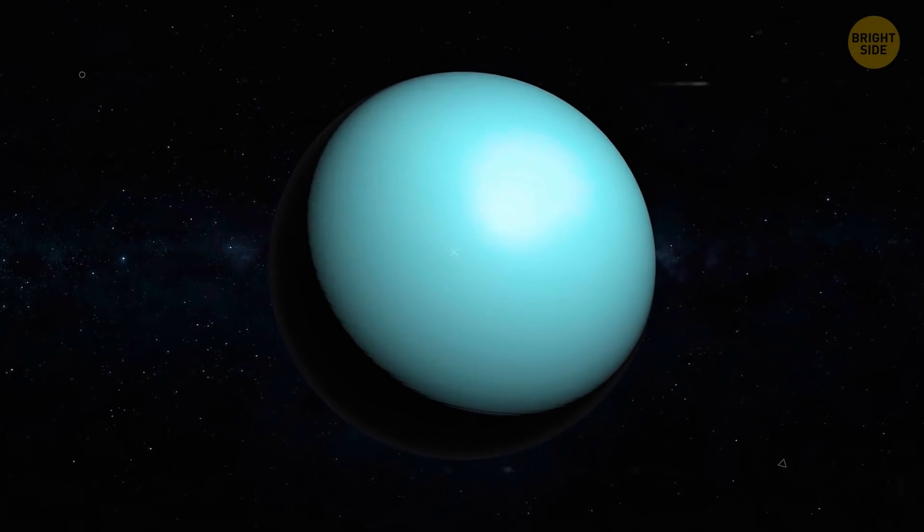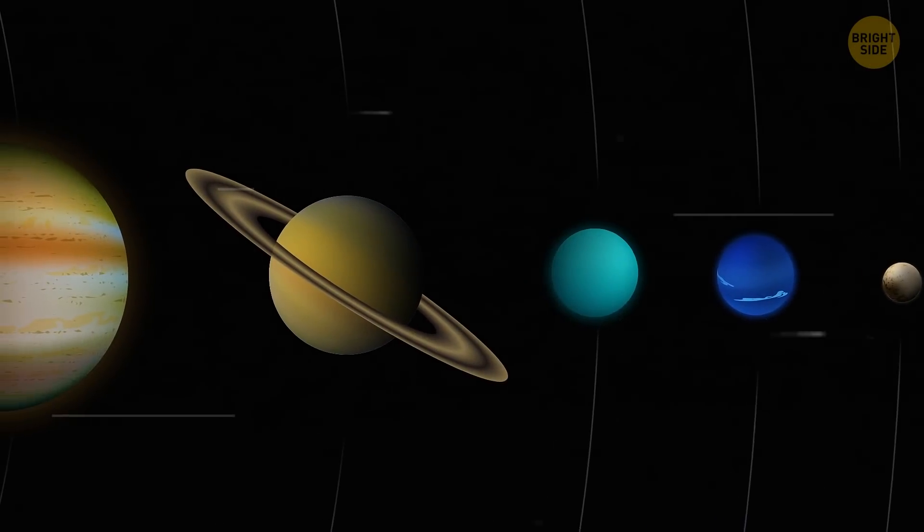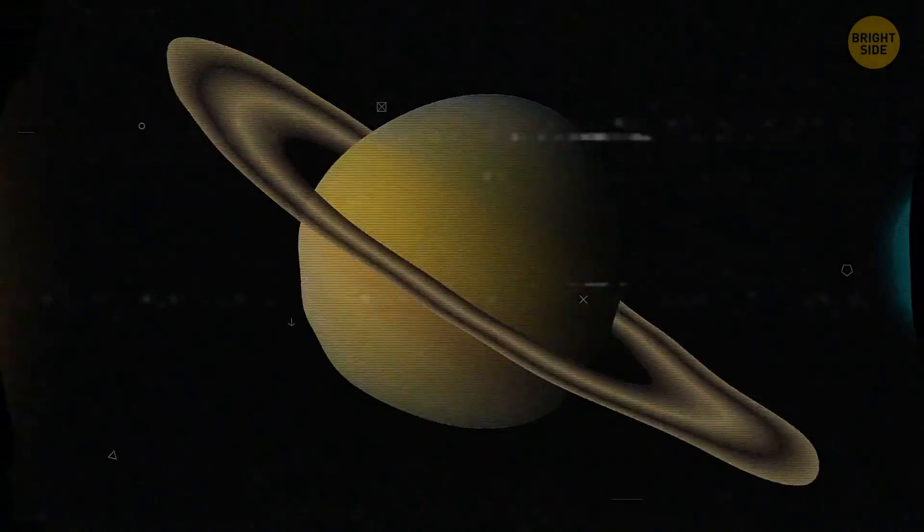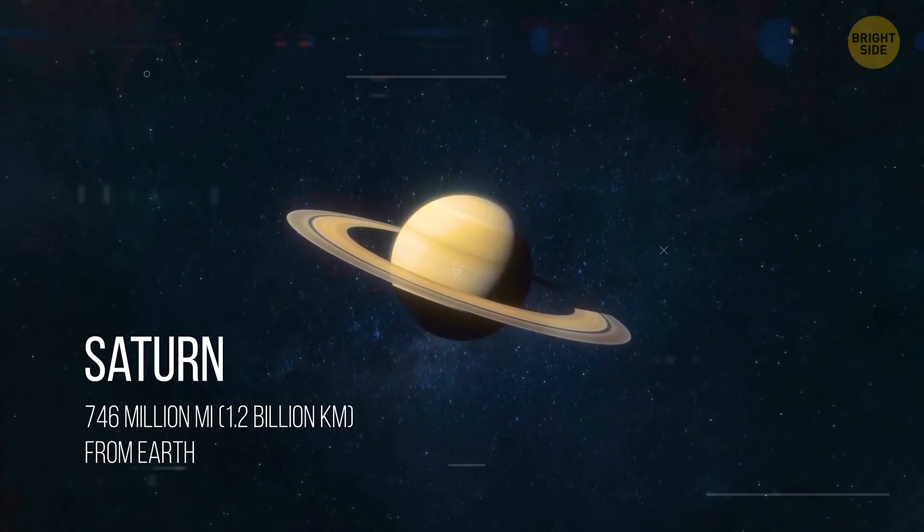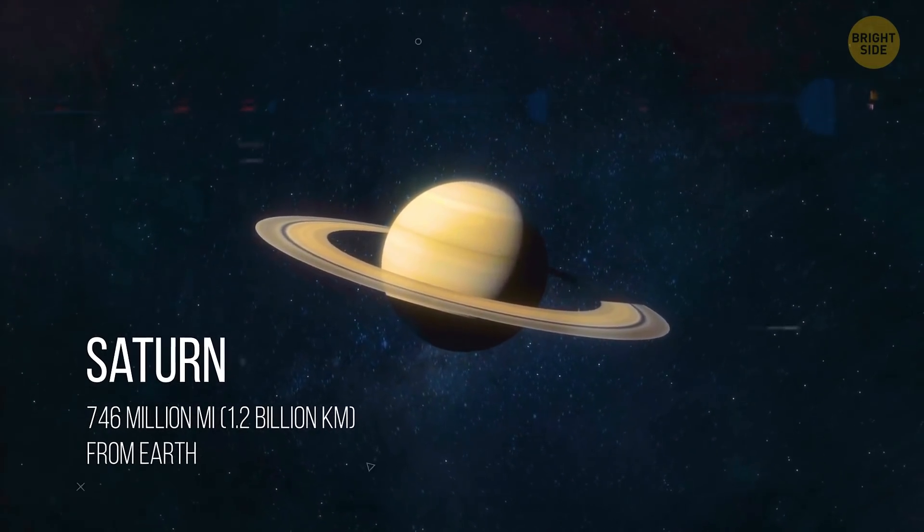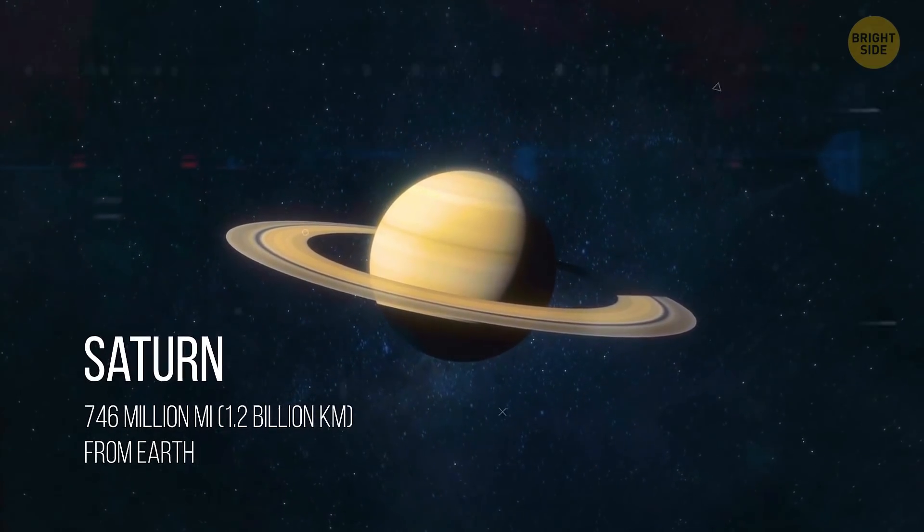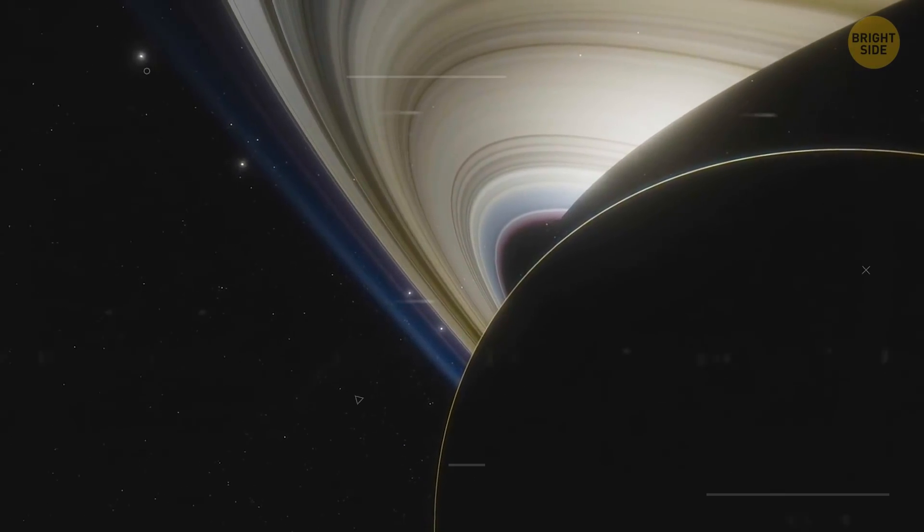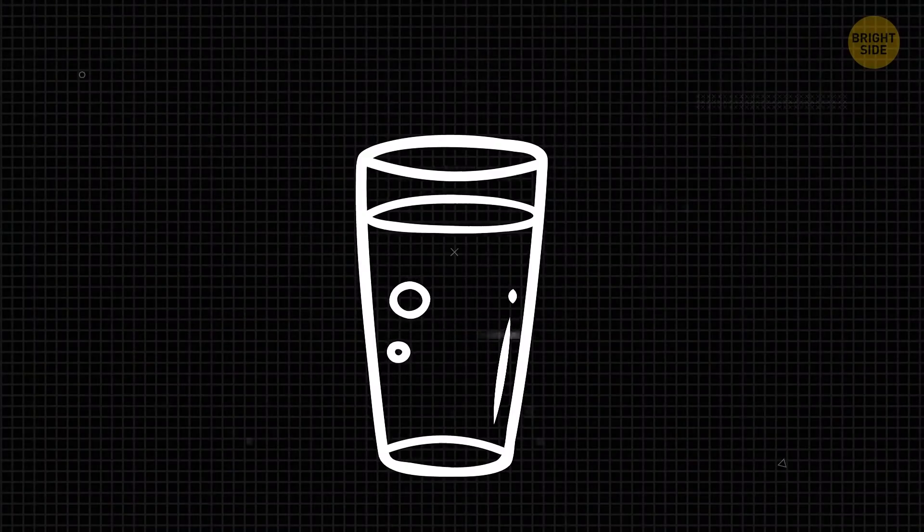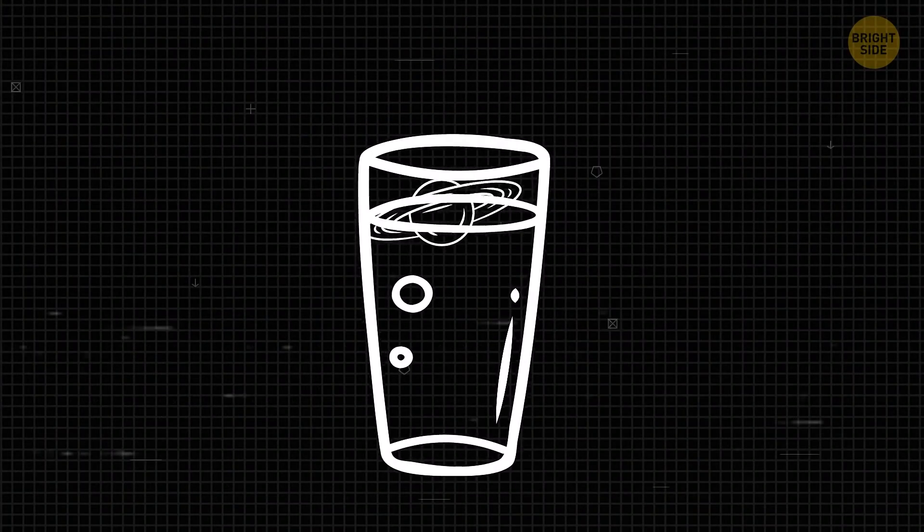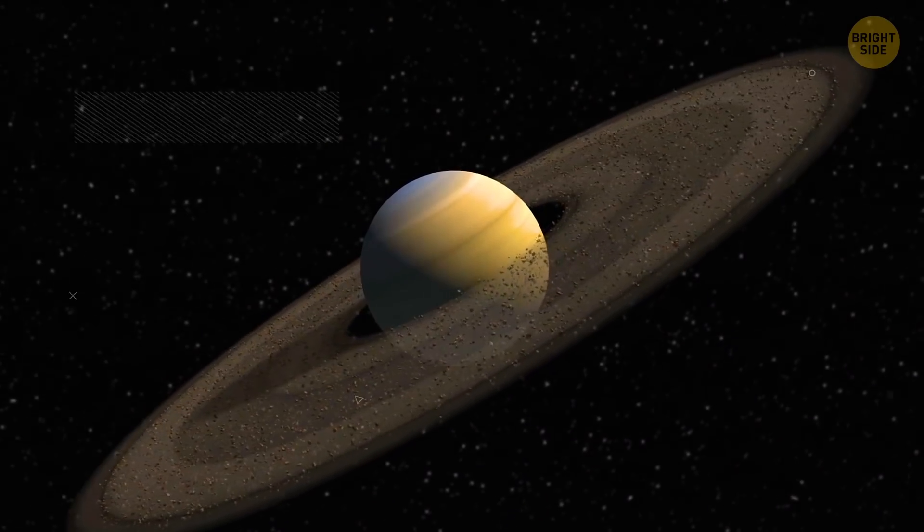And now we approach the jewel of the solar system, Saturn. The second biggest planet after Jupiter, and another gas giant where you'd sink in an endless atmosphere if you tried to land a spaceship there. Saturn is the least dense planet of them all. Meaning, if you put it in a giant glass of water, it'd float.